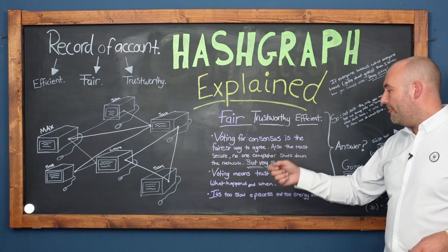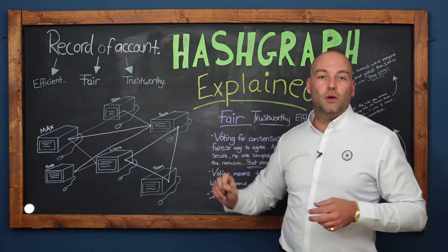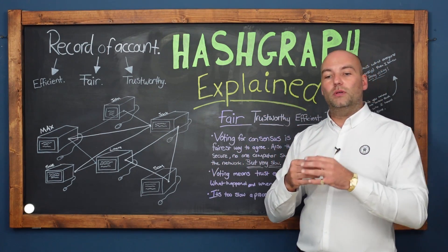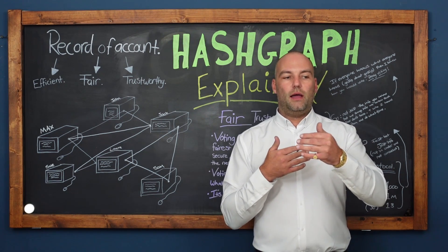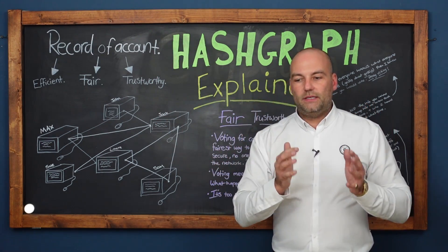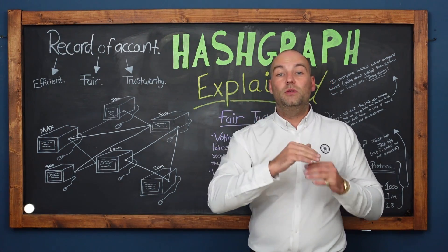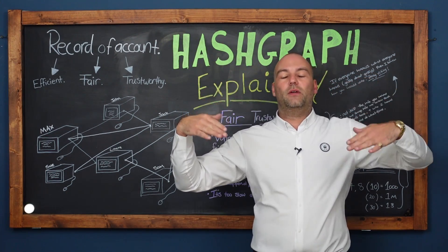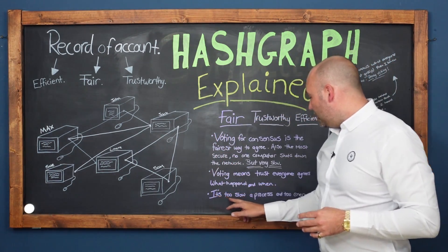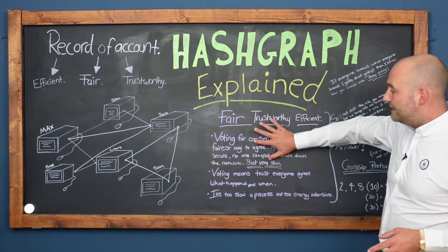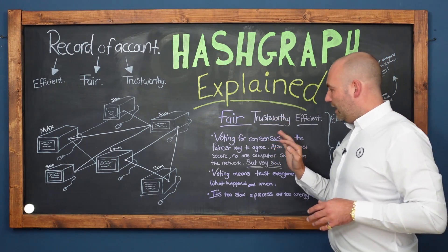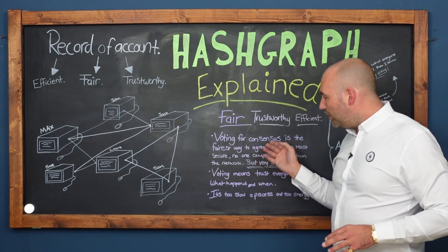Voting means trust — everyone agrees on what happened and when. It's not just fair, it's trustworthy because everybody agrees. Everyone agrees that this is what happened, when it happened, and in what order. This is very important: if the stock market were run on a cryptocurrency platform and you bid for shares or bet on a horse, you need to know that you did that first — that you got your bid in just before the time ran out, or that if two people bid at the same time for the same amount, you bid slightly first and therefore you won.